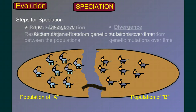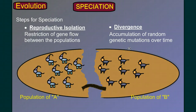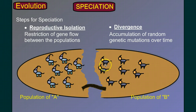To recap the steps for speciation: we need reproductive isolation — a restriction of gene flow between populations. And as a result, over time we'll get divergence, an accumulation of random genetic mutations, such that at some point the two groups become separate species.